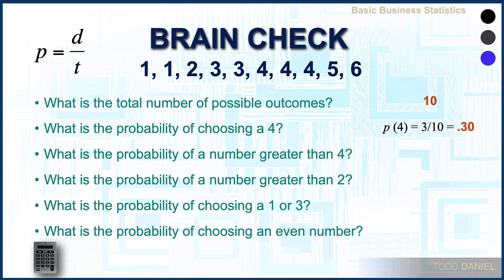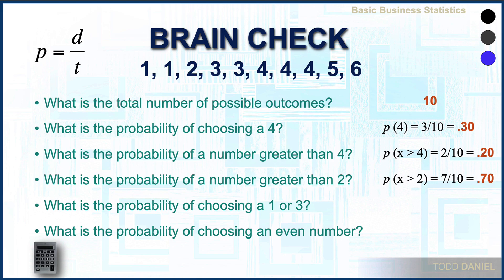What is the probability of choosing a number greater than 4? We're not interested in the specific number, just whether it is greater than 4. The numbers 5 and 6 are both greater than 4 — there are 2 such numbers, so the probability is 0.20. What is the probability of choosing a number greater than 2? There are 7 numbers greater than 2, so the probability is 0.70. What is the probability of choosing either a 1 or a 3? There are two 1s and two 3s for a total of 4 possible successes, giving a probability of 0.40. What is the probability of choosing an even number? Looking through the data set, we have 2, 4, 4, 4, and 6 — a total of 5 even numbers — so the probability is 0.50.